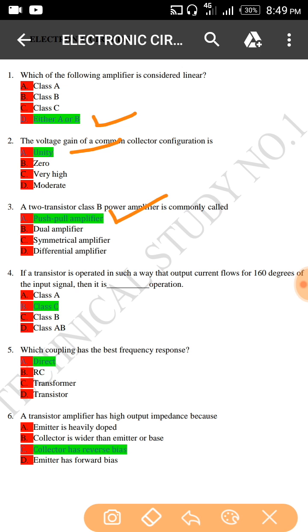If a transistor operates in such a way that the output current flows for 160 degrees of the input signal, then it is... 160 degrees, more than half, that is the Class C amplifier.